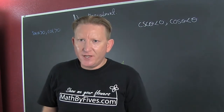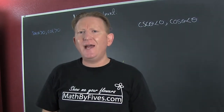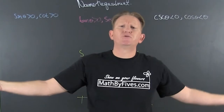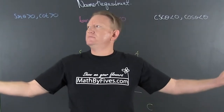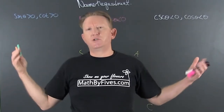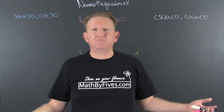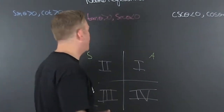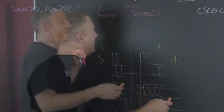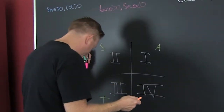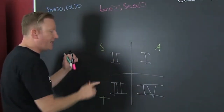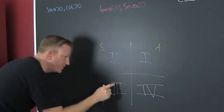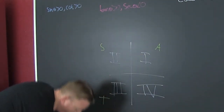All right, everybody. We're here for another episode of Name That Quadrant. So what do we have? We have the trigonometric functions, and we want to know which quadrant satisfies a certain condition. You might have heard that all students take calculus. This is quadrant 1, quadrant 2, quadrant 3, quadrant 4.